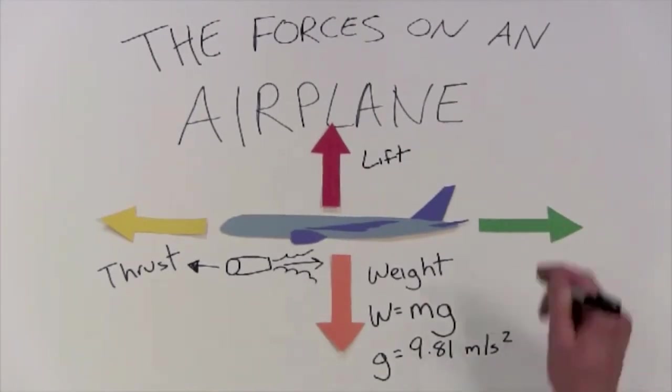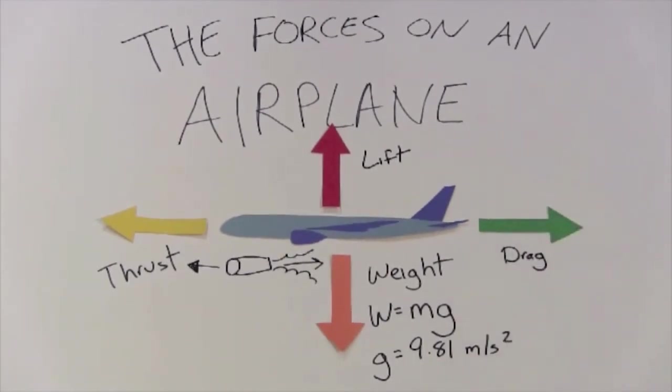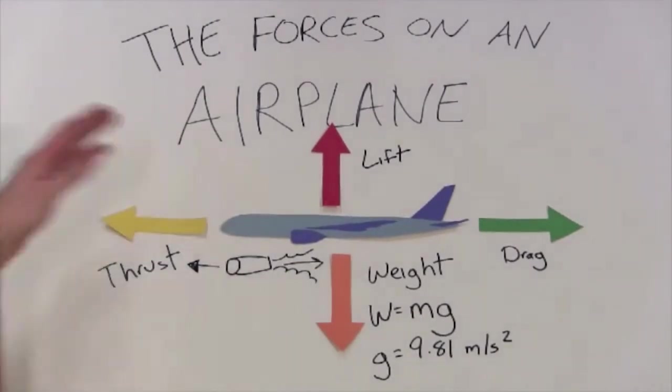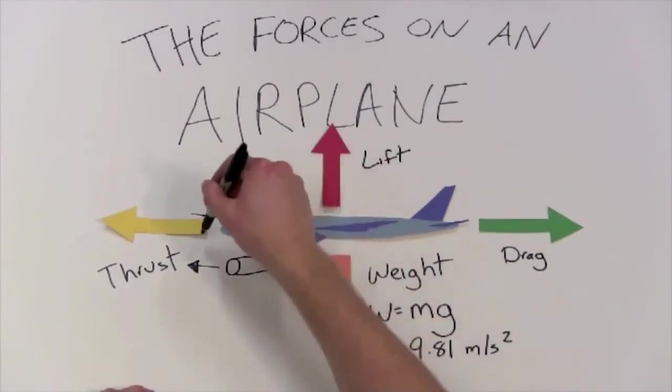We have the force that opposes the thrust - it's called drag. It points opposite the direction of flight. The major type of drag is pressure drag, which is the force caused by the air smacking into the airplane. So we try to minimize this type of drag by making the airplane as aerodynamic as possible. That means that it has smooth lines and the air flows nice and cleanly over the front here.